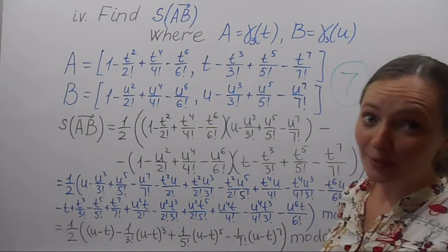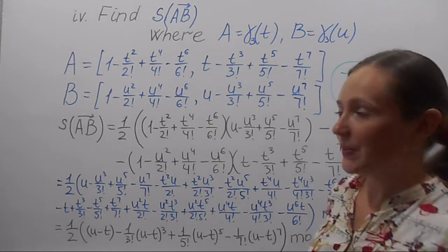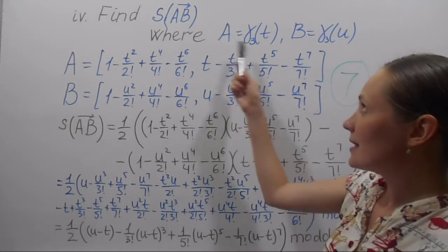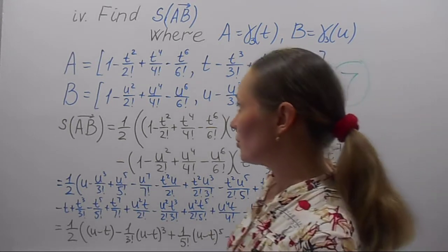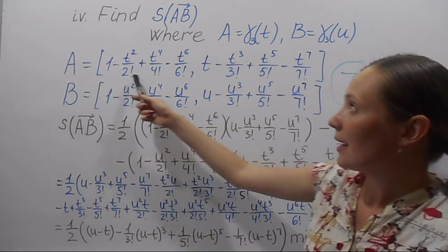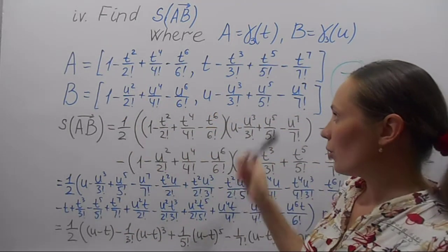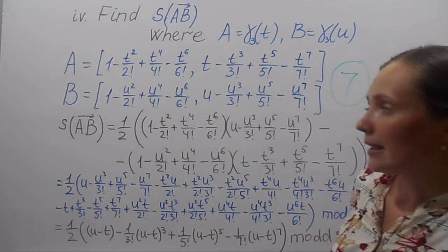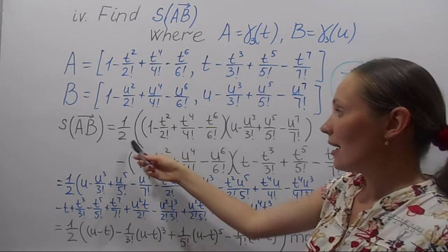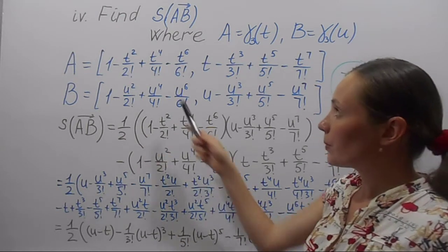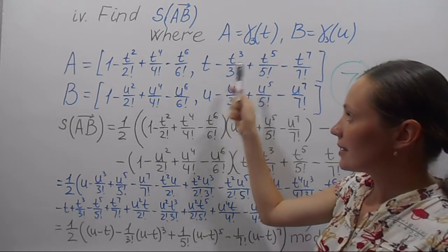In this part of the video, we need to find the sine area of the oriented segment h AB, where A is the point γ3 of t and B is γ3 of u. A and B each have specific coordinate forms, and the sine area of the oriented segment AB is one half of the product of the first component of A times the second of B minus the second of A times the first of B.